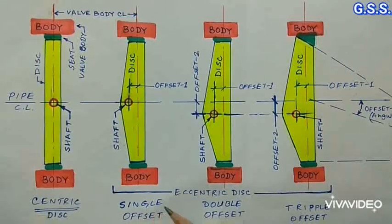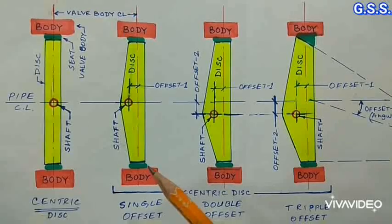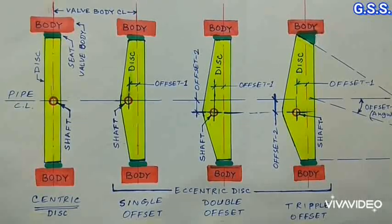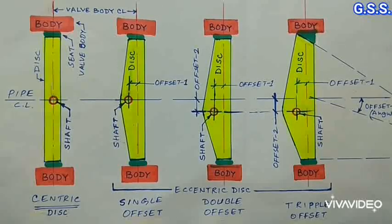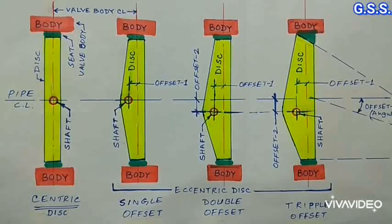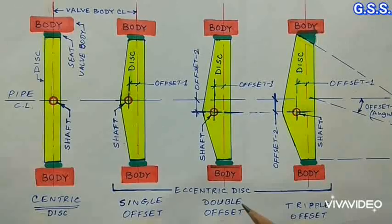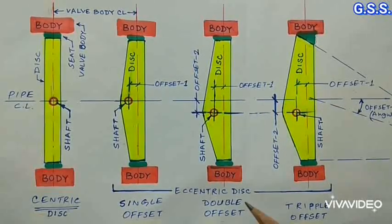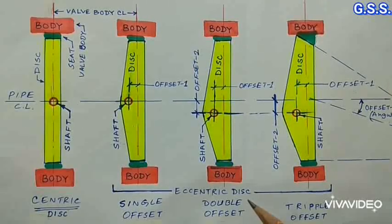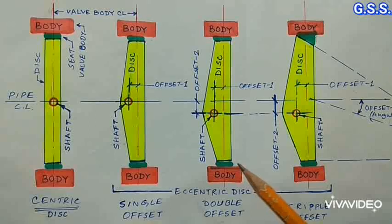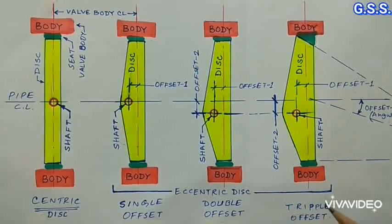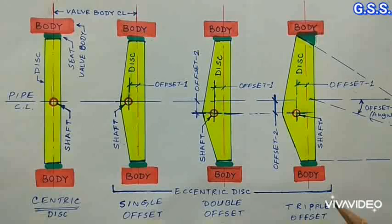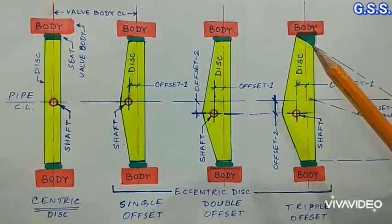Centric and single offset valves are having soft EPDM or nitrile seat and used for non-critical service up to 10 to 12 bar pressure and 80 degree Celsius temperature. That means up to 150 pound class only. Double offset valves are used for high pressure application up to 70 bar pressure. That means up to 600 pound class. And temperature up to 200 degree Celsius if VITON or PTFE seat is used. Triple offset butterfly valves can be used at much higher pressure and much higher temperature since there is only metallic seat. That means metal to metal contact.